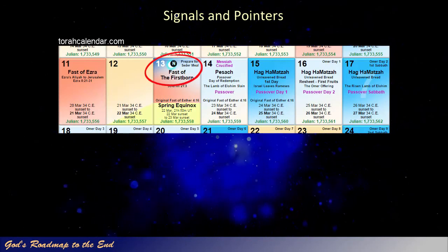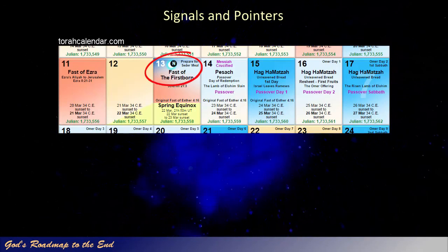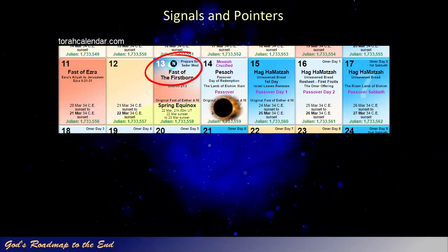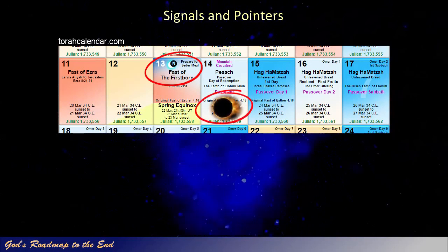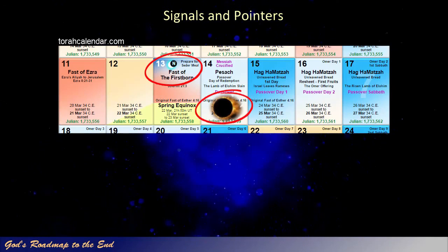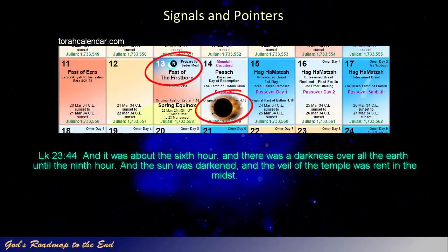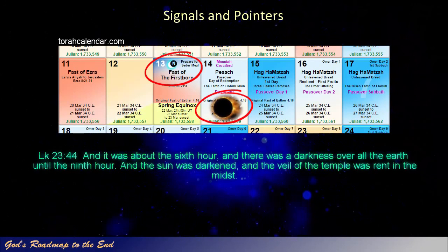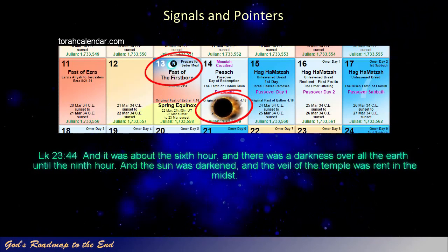This in itself would not be something out of the ordinary, except for the fact that it was followed by a massive three-hour-long solar eclipse that occurred in the same twenty-four-hour period. This unusual event is recorded in the Gospels, and this is Luke's account of the event. Luke 23 verse 44: 'And it was about the sixth hour, and there was a darkness over all the earth until the ninth hour. And the sun was darkened, and the veil of the temple was rent in the midst.'